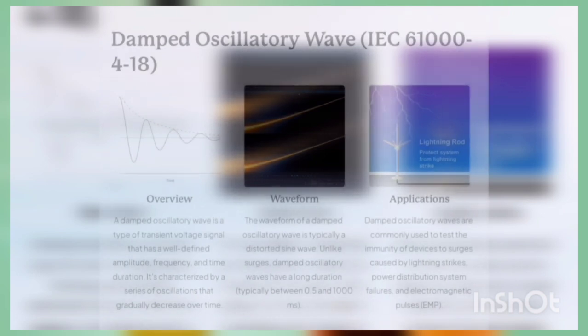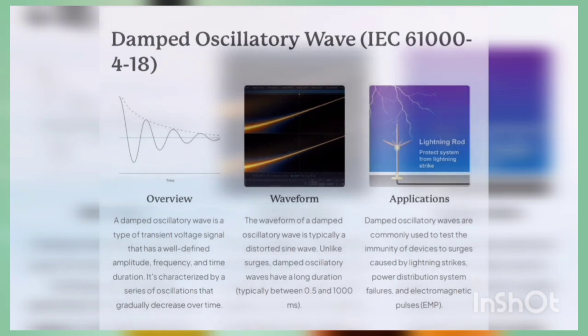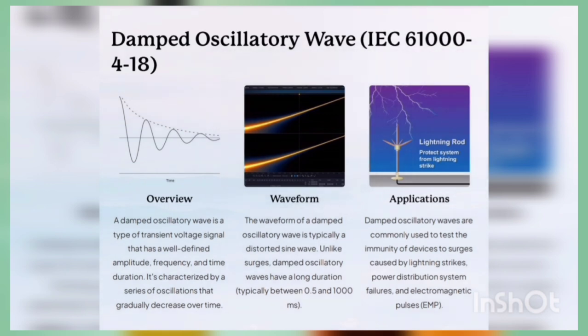First we understand the damped oscillatory wave, which standard is IEC 61004-18. In the overview we can see the frequency and how it is damped. A damped oscillatory wave is a type of transient voltage signal that has a well-defined amplitude, frequency and time duration. It is characterized by a series of oscillations that gradually decrease over time. Here we can observe the amplitude of the wave is decreasing over time — that is the main parameter of the damped oscillatory wave.